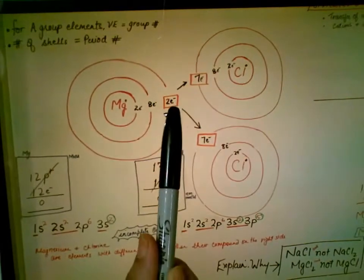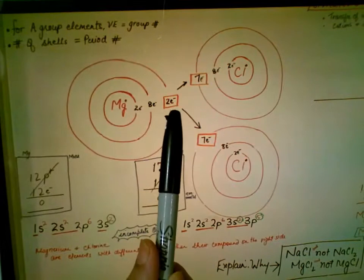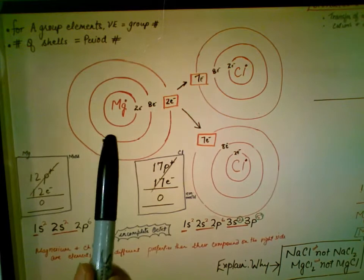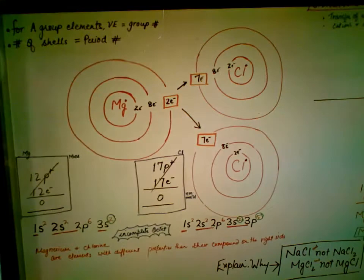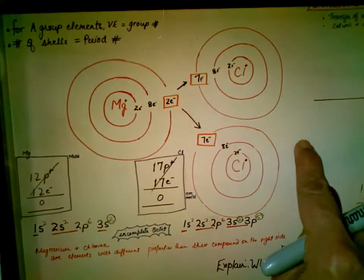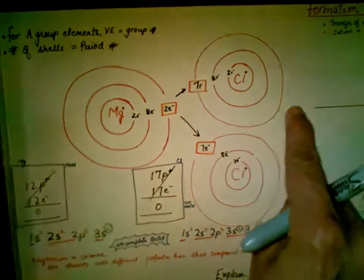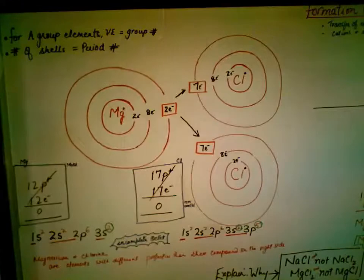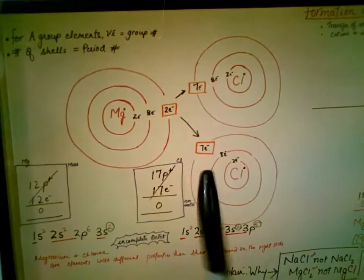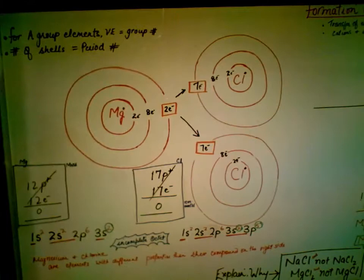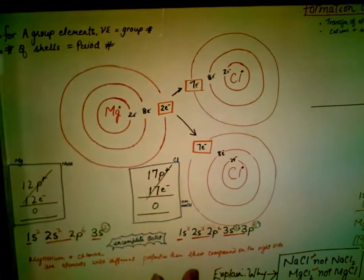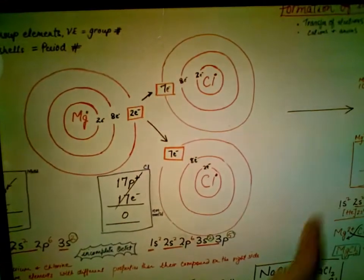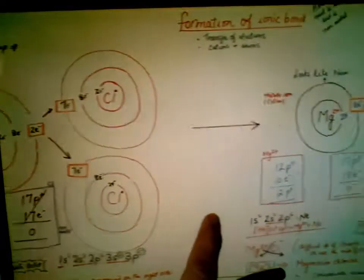Magnesium has two valence electrons, so it belongs to Group 2A, and with three energy levels it belongs to Period 3 on the periodic table. The same logic applies to chlorine — we look at the number of shells for the period and the valence electrons for the group. The octet is incomplete for both, and magnesium and chlorine have different properties compared to the compound they form.